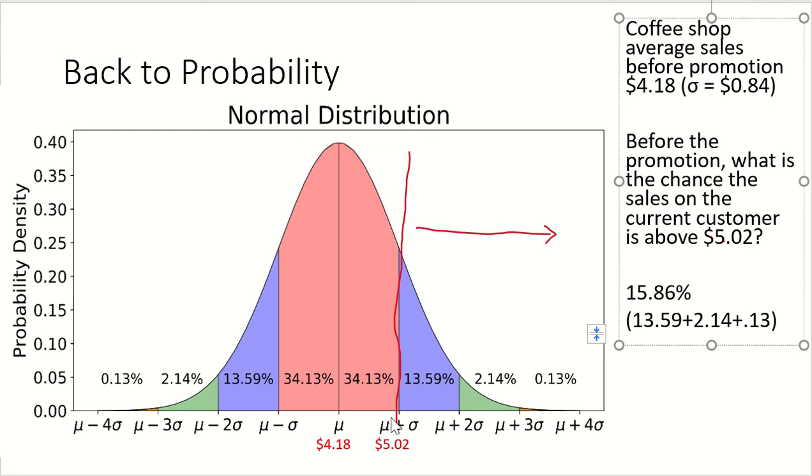If I go out one standard deviation, 16% of the population, 16% of all of my sales, is going to be above $5.02.